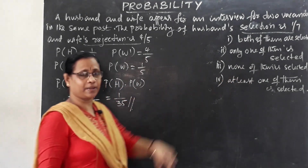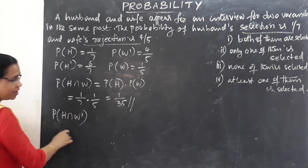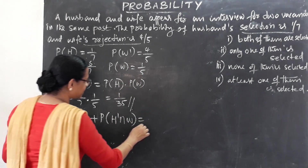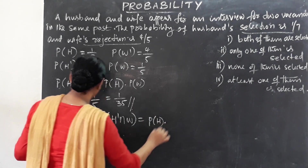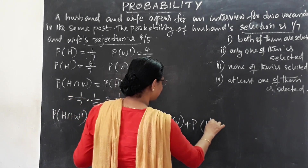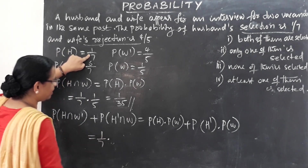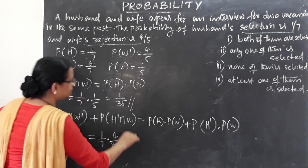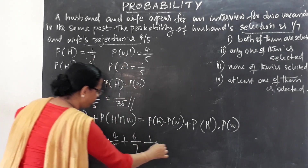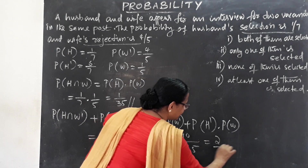For the second question — only one of them is selected — we either select the husband and reject the wife, or reject the husband and select the wife. The formula is: probability of H into probability of W' plus probability of H' into probability of W, which equals (1/7)(4/5) plus (6/7)(1/5), giving 4/35 plus 6/35, that equals 10/35, which simplifies to 2/7.